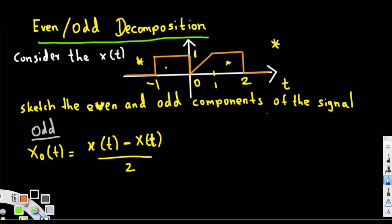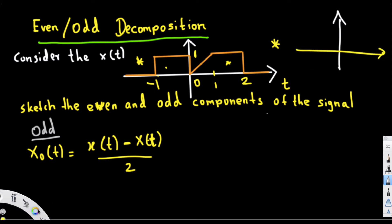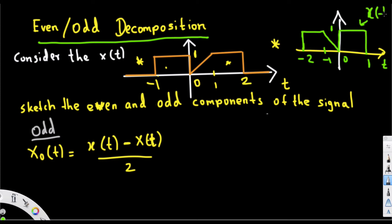I'll roughly draw x(-t) again since we need it for the odd function. We just flip x(t) to the other side. It goes from negative two to negative one, negative one to zero, and then zero to one, with height one. That is the rough graph of x(-t).